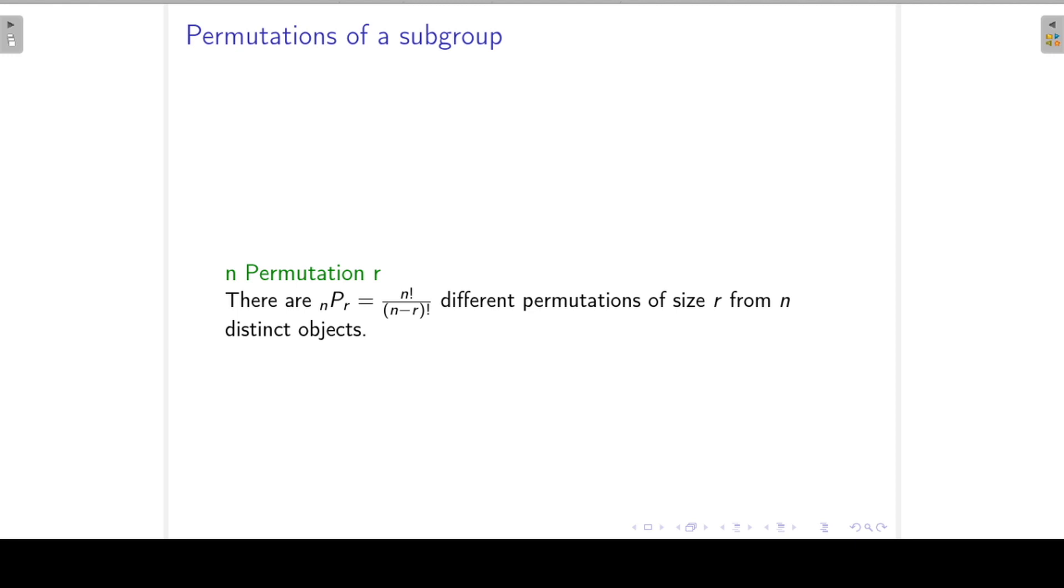And that then brings us to n permutation r. There are n permutation r different permutations of size r from n distinct objects. So for our example, that would be 5 permutation 3, which is 5 factorial over (5 minus 3) factorial. Now 5 factorial is 120, 5 minus 3 is 2 factorial, which is 2 times 1, which is just 2, and that is equal to 60. So 60 possible permutations of size 3 from a total of 5 distinct objects.